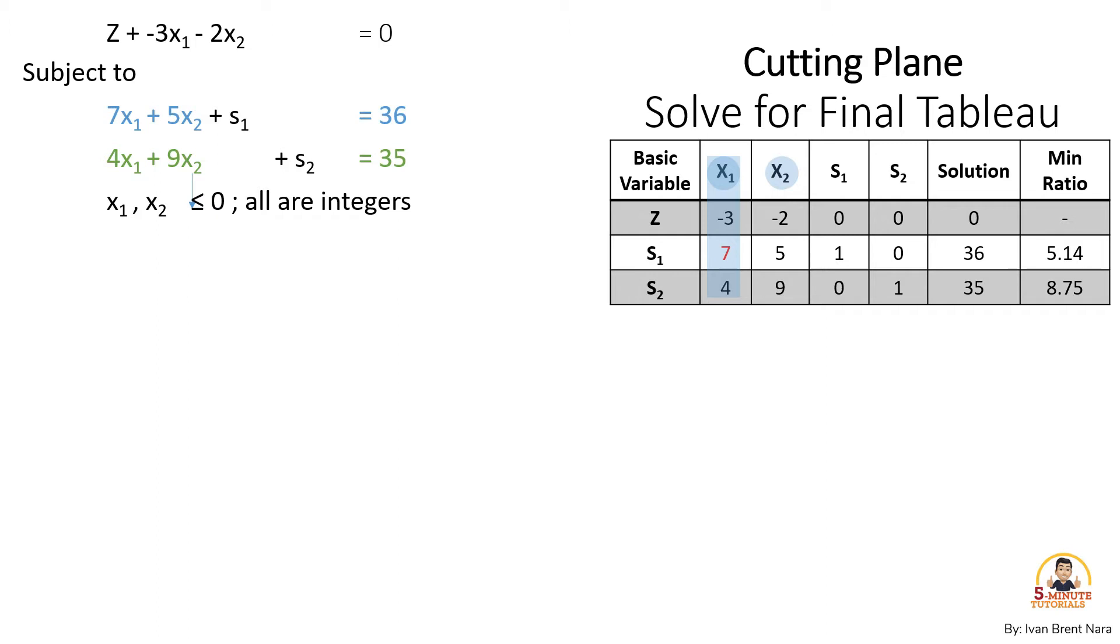Next, divide solution column by column 2 or x₁ so 36 divided by 7 is 5.14 and 35 divided by 4 is 8.75.